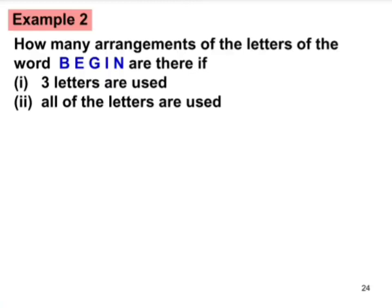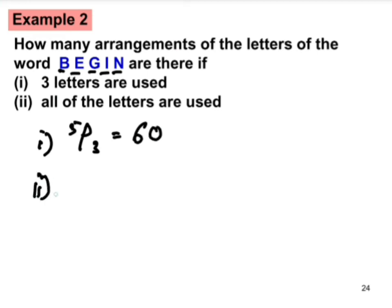Example two: How many arrangements of the letters of the word BEGIN are there if three letters are used, or all of the letters are used? The word BEGIN has five letters. For three letters, we calculate 5P3 = 60. For all letters used, we calculate 5P5 = 120.